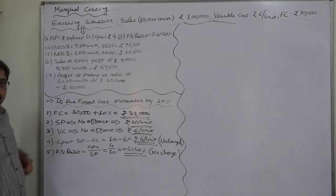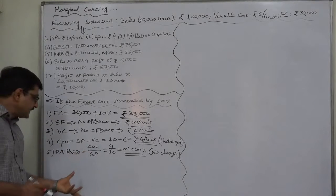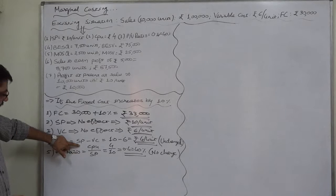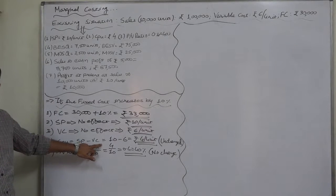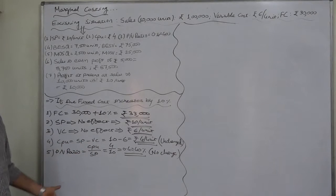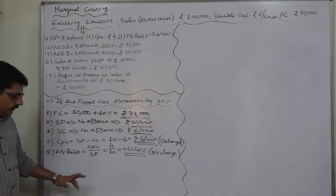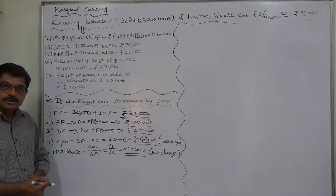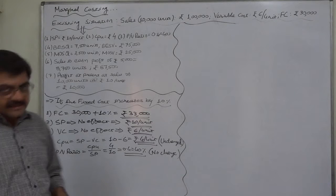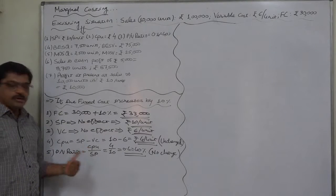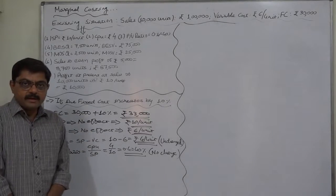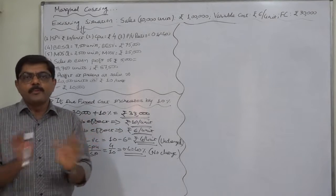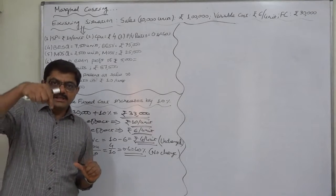Why no change in contribution or PV ratio? Because the fixed cost has no place in the formula to calculate contribution or PV ratio. In calculating contribution, we just have to consider sales value and variable cost, so there is no role of fixed cost in calculating contribution per unit or total. Similarly, in calculating PV ratio also, we consider contribution and selling price, no change in these two, no role of fixed cost in calculating PV ratio.